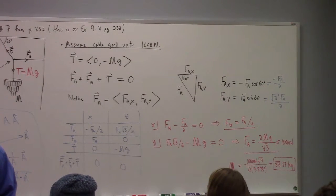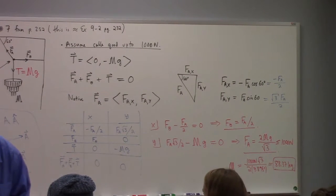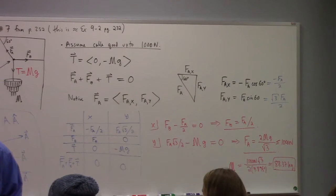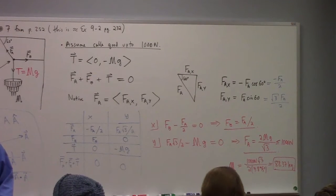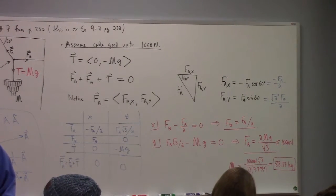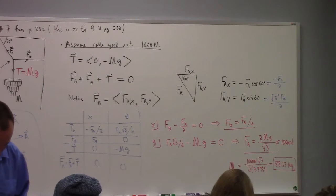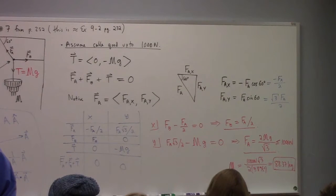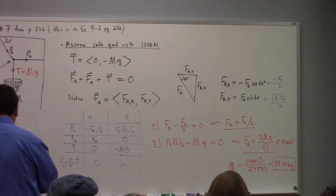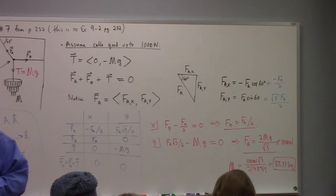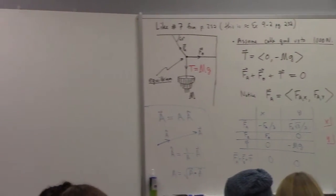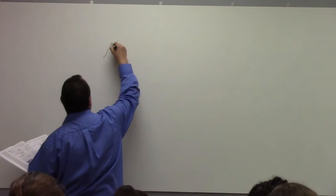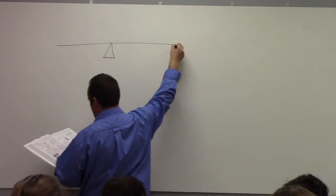The next problem is the teeter-totter problem — again, something you may have worked out in the lab analysis. Here's the basic problem: you've got a teeter-totter with B having a mass of 35 kilograms on one side, and A with a mass of 45 kilograms on the other side.